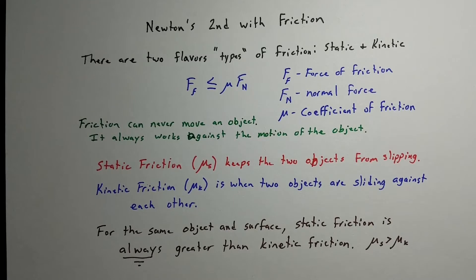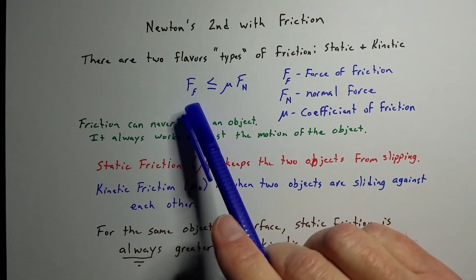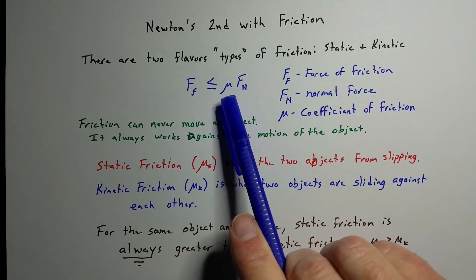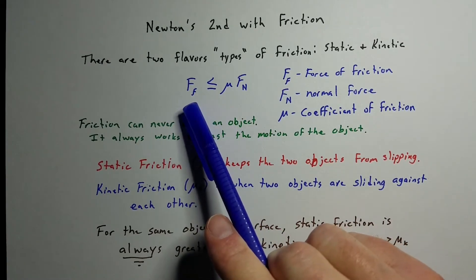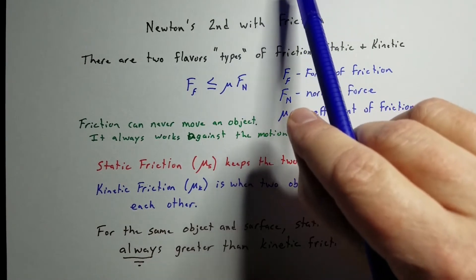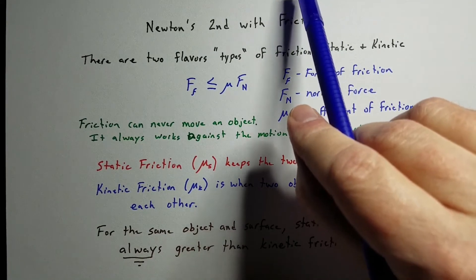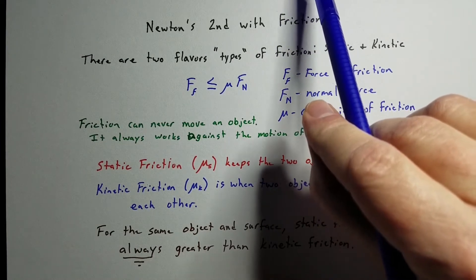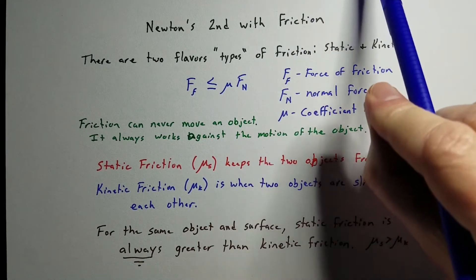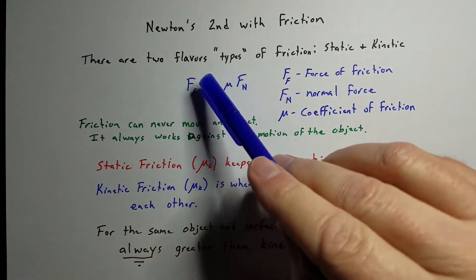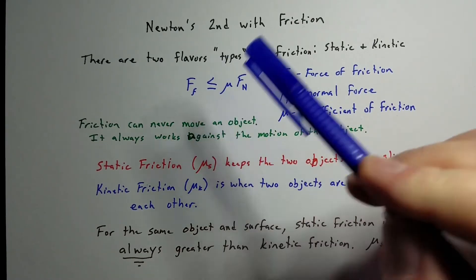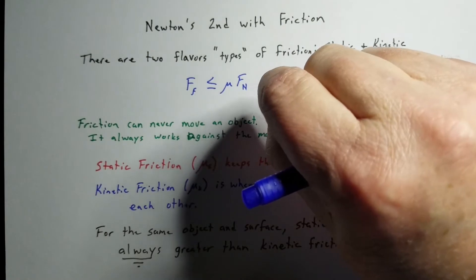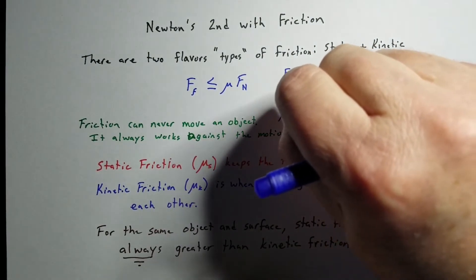Friction comes in two different flavors: kinetic friction and static friction. Both types use the same equation, where the force of friction is less than or equal to mu — the coefficient of friction — times the normal force. The reason it's less than or equal to is because friction can never move an object. As you pull harder and harder, friction goes up until eventually you pull hard enough to overcome it and the block starts moving.